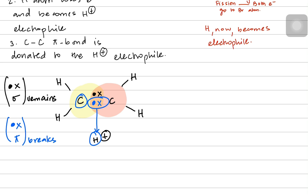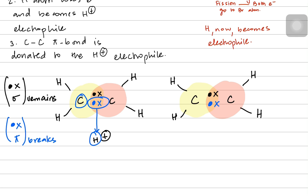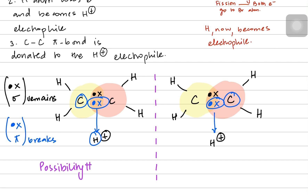Another possibility is that the red carbon makes a bond with the hydrogen instead, making the yellow carbon electron-deficient. So there are literally two possibilities: possibility number one or possibility number two. In our case, the structure of ethene is symmetrical, so it doesn't really matter — but we will talk about examples where it becomes really vital.